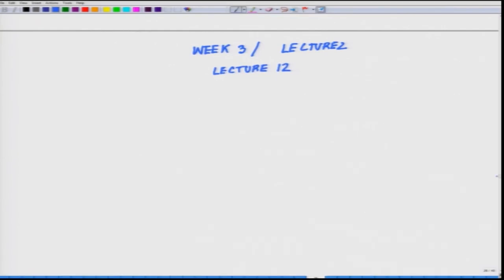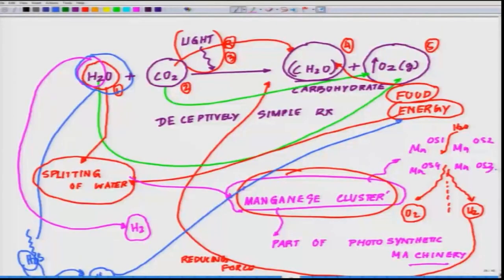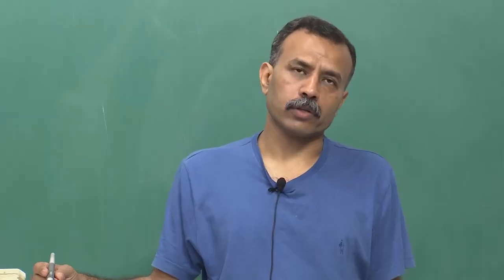In the previous lecture, we talked about the deceptively simple reaction of photosynthesis where you saw the water molecule react with carbon dioxide leading to the generation of carbohydrate, which is mostly sucrose, glucose, and as a byproduct oxygen.